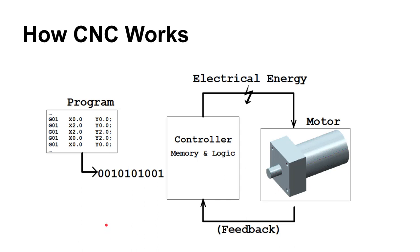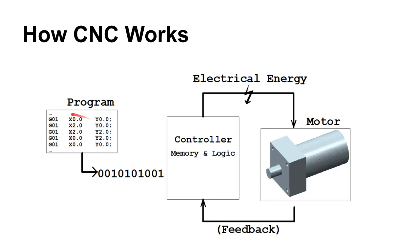At a thousand-foot view, you take a program — this is where the human interfaces with the machine. The human programs this code, and there's a separate layer of abstraction: you can use CAM software (Computer-Aided Manufacturing) that takes a CAD model of a 3D shape you want to machine and helps you write this code. This is where the operator interacts with the machine.